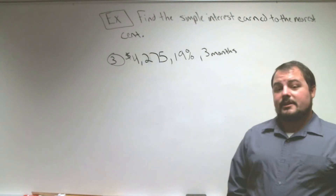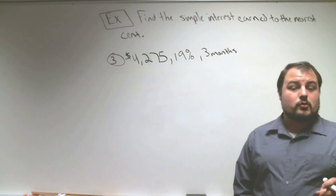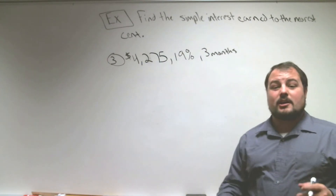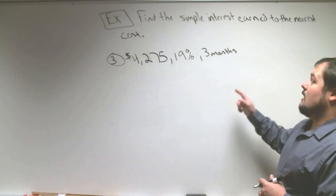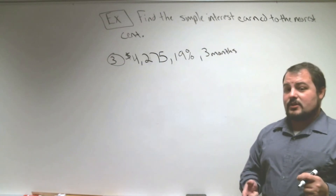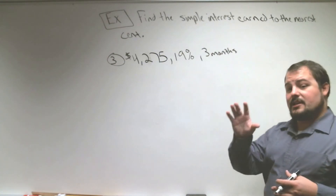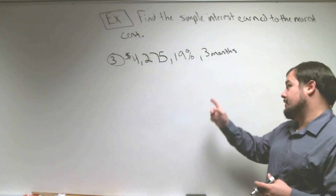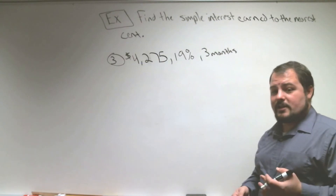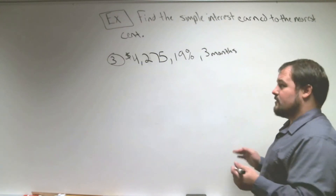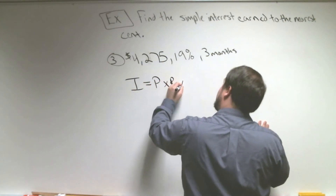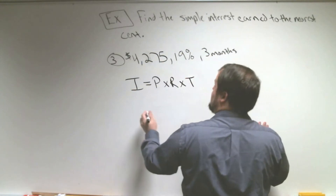In Example 3, we're going to put a lot of money in the bank — $4,275 — and we get a great interest rate of 19%. We're going to leave it in the bank for three months. Notice this time it's in months, not years, but the simple interest formula requires time in years, so we have to convert months to years. The formula is still interest equals principal times rate times time.